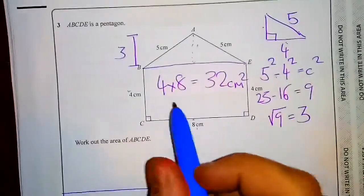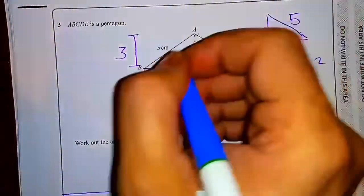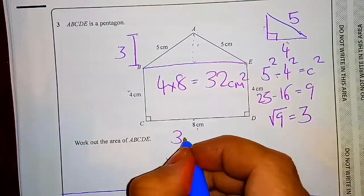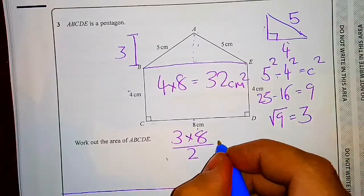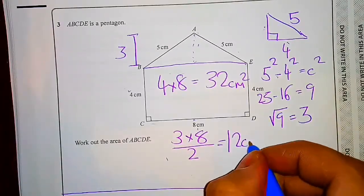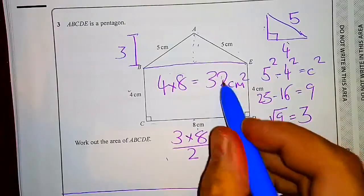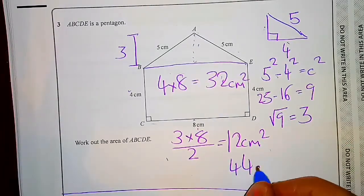Now to work this one out, all I have to do is my height, which is 3, times my base, which is 8, and I have to halve it because you always halve it with your triangles, which gives me 12 centimeters squared. Then you add these two together to give me 44 centimeters squared.